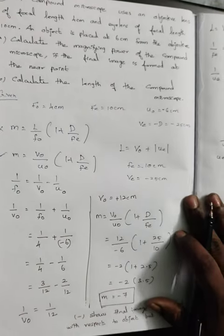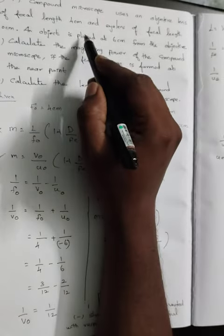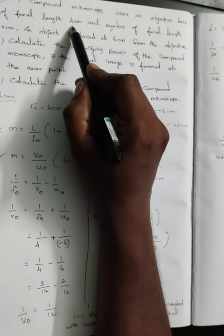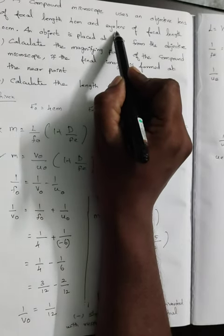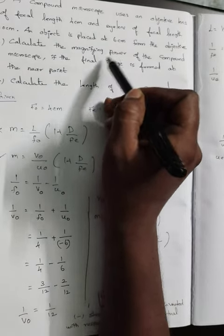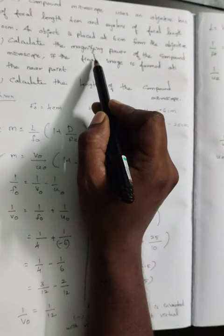This is the answer section for the problem. A compound microscope uses an objective with 4 cm focal length and an eyepiece with 10 cm focal length. The object is kept at 6 cm in front of the objective.